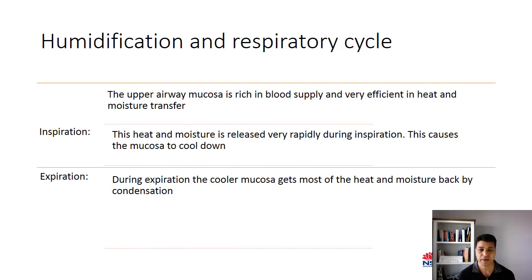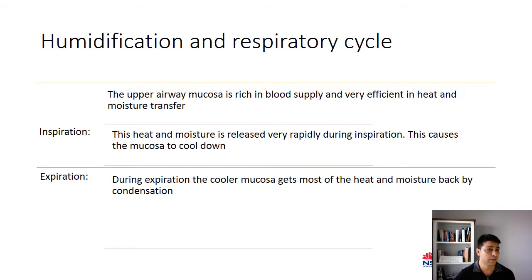The upper airway is very rich in blood supply, and as a result it is very efficient in heat and moisture transfer. The heat and moisture is released very rapidly during inspiration, and this causes the nasal mucosa to cool down. When warm air is coming out during the expiratory cycle, it absorbs the heat and moisture back from the air. As a result, the nasal mucosa warms up again, and it keeps the heat and moisture ready for the next breath in.